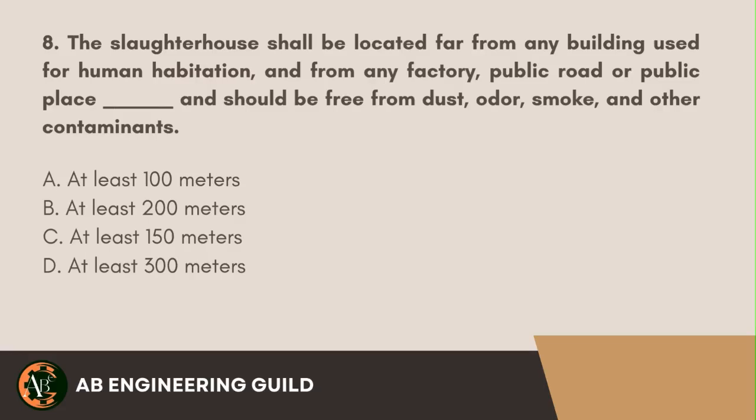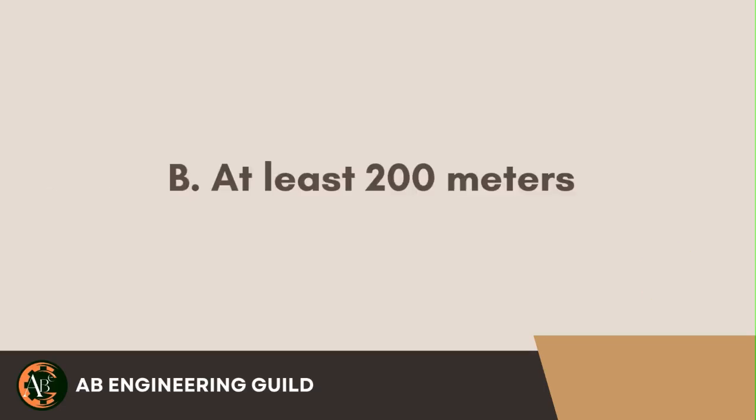Question 8. The slaughterhouse shall be located far from any building used for human habitation, and from any factory, public road, or public place, at least blank meters. The slaughterhouse should be free from dust, odor, smoke, and other contaminants. A. At least 100 meters. B. At least 200 meters. C. At least 150 meters. D. At least 300 meters. Answer: B. At least 200 meters.